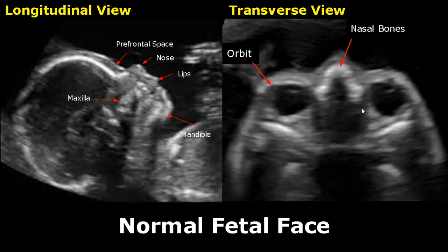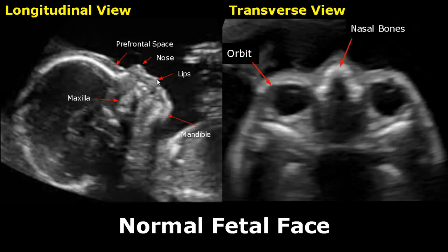These are longitudinal and transverse views of the fetal face. The sagittal facial profile is best for evaluating the face — we can see a lot of structures. Here is the prefrontal space in front of the frontal bone. This slanted hyperechoic line is the nasal bone, and here is the nose. You can see the upper and lower lips as well. This hyperechoic structure is the maxilla, and over here is the mandible.